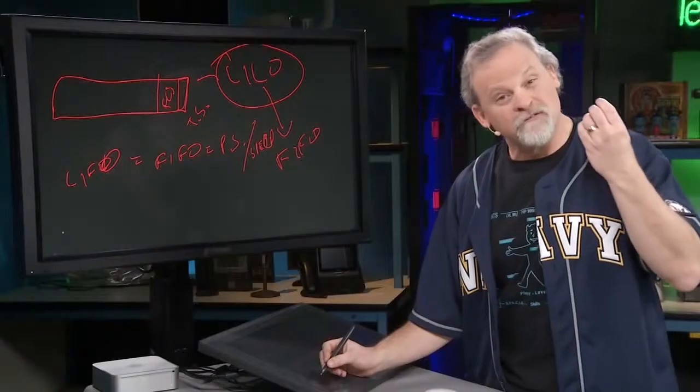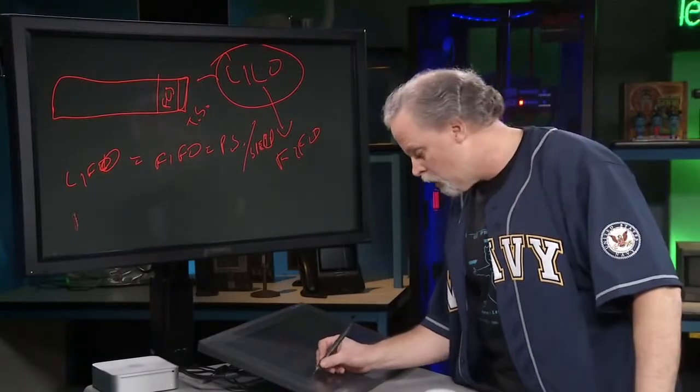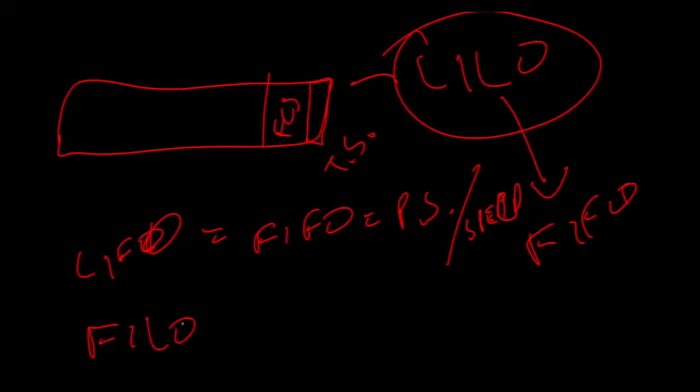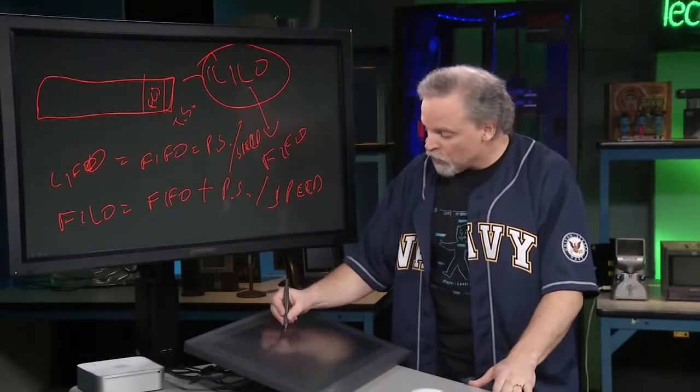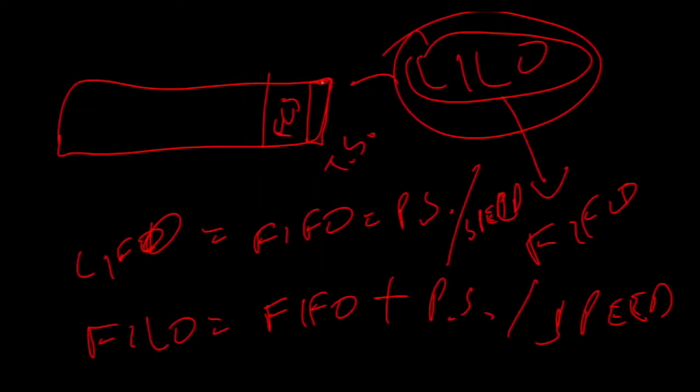Now if we want to get our FIFO measurement, our first and last out, then it's just the opposite. It's just like associative math. We say that FIFO will equal FIFO plus my packet size and the speed of the link. And that's how we derive all this information from this one measurement, because the timestamp is always going to be in the same place.